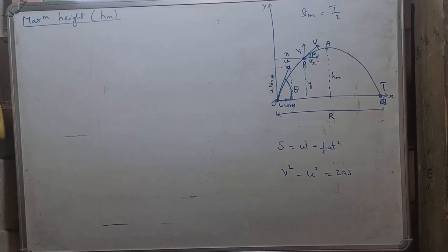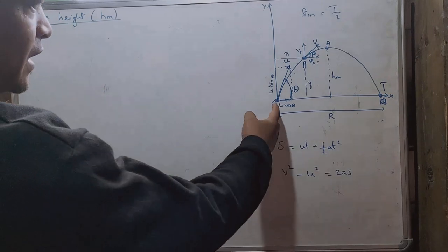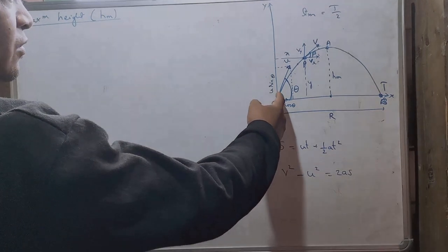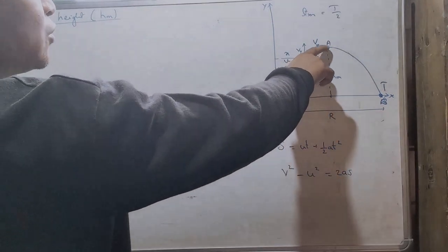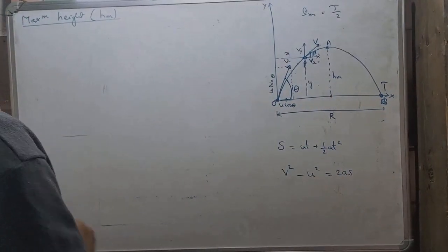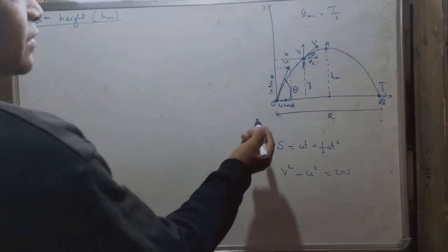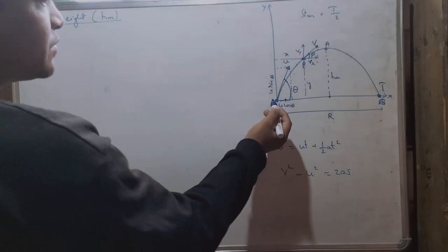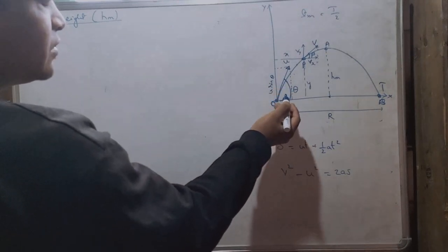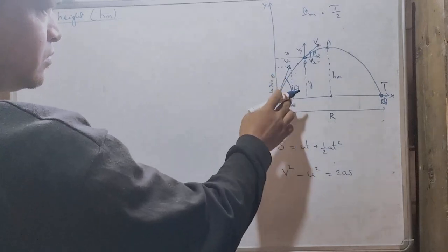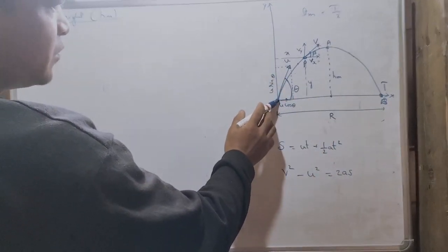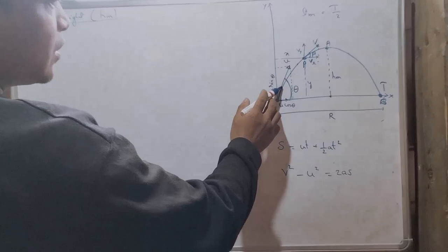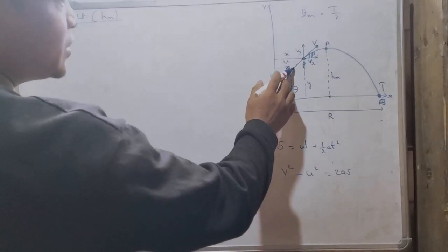Maximum height of a projectile. The maximum height is defined as the height up to which the projectile can go up. Assume in this figure, when a projectile is projected at some angle with respect to the horizontal, the projectile will go along this curved path.